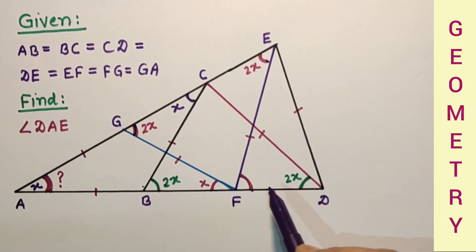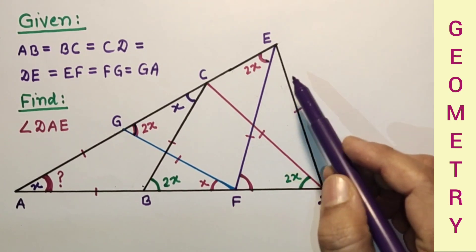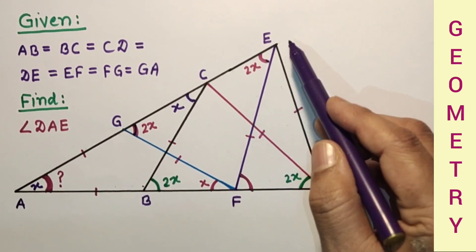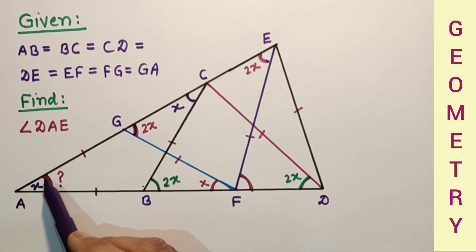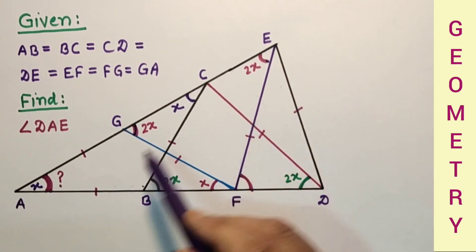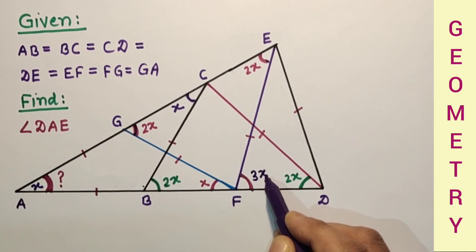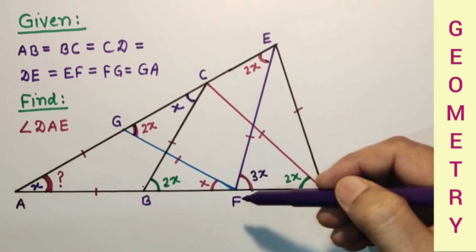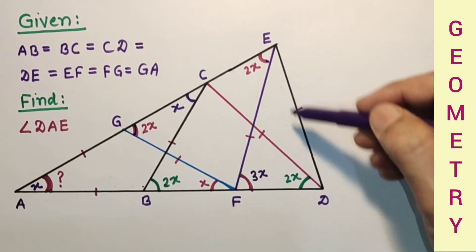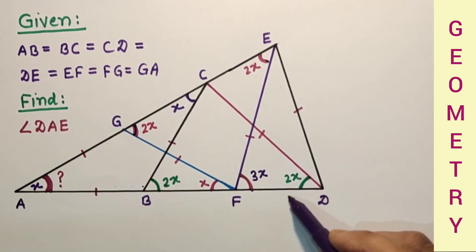This angle is the sum of X and 2X because angle EFD is an exterior angle, equal to the sum of the two remote interior angles — so 2X plus X is 3X. This is 3X. Now ED is equal to EF, so this is an isosceles triangle — this angle is 3X, and this will also be 3X. But this part is already 2X, so this remaining part is X only.